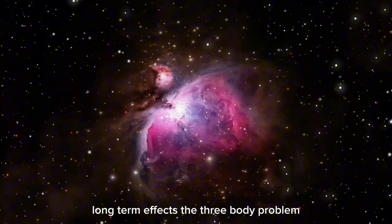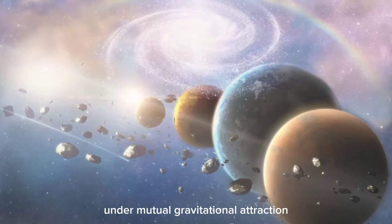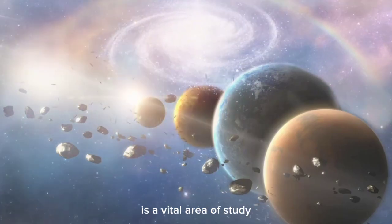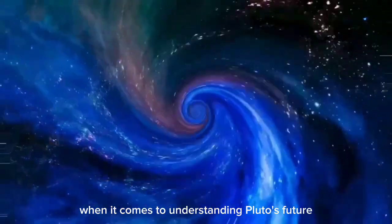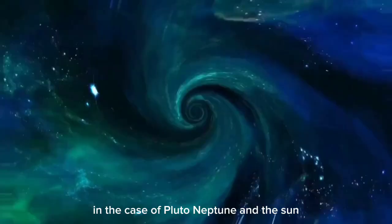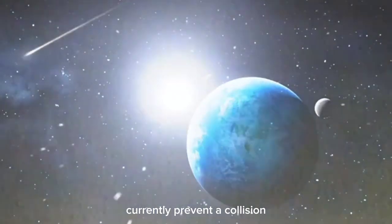The three-body problem, which deals with predicting the movements of three celestial bodies under mutual gravitational attraction, is a vital area of study when it comes to understanding Pluto's future. In the case of Pluto, Neptune, and the Sun, this problem suggests that while the planets' interactions currently prevent a collision, their gravitational pulls could shift in unpredictable ways over time, potentially causing dramatic changes in Pluto's orbit.